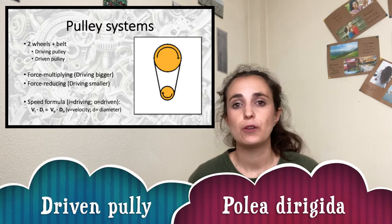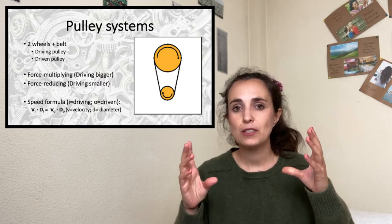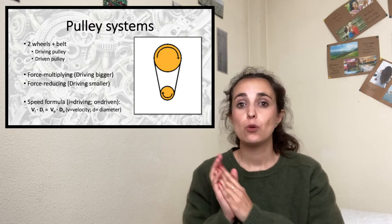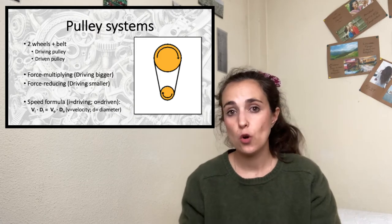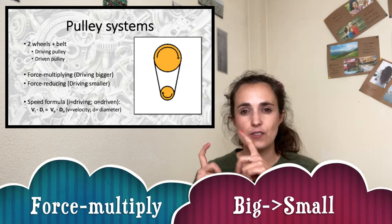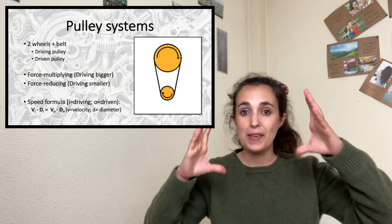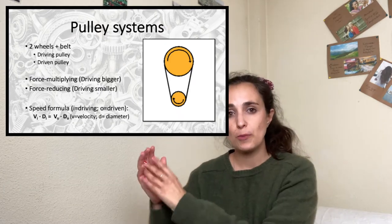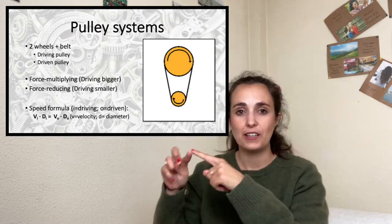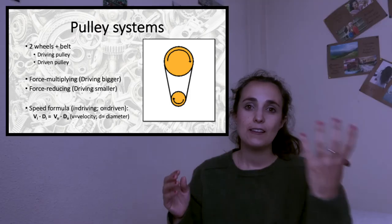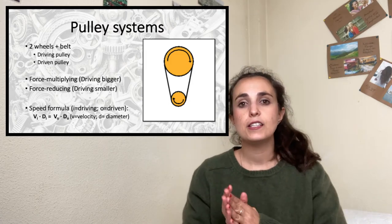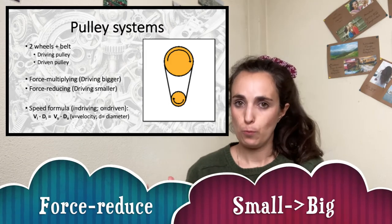This is interesting because we can use pulleys with the same size but also with different sizes, and if we combine sizes we can make the movement go faster or go slower. If we want to go faster — to force multiply the movement — the driving pulley should be bigger. On the opposite way, if we start the movement in the smaller pulley, the bigger pulley will be slower, and this is called force reducing motion.